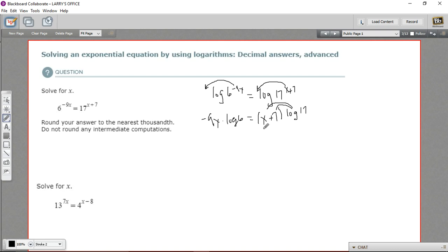I need to get at that x and break that out separately. So when I do that, I get x times the log of 17, and I get 7 times the log of 17. And that still equals negative 9x times the log of 6. My next step is to get all the x terms on one side of the equation. So I've got to subtract this x log 17 from both sides.